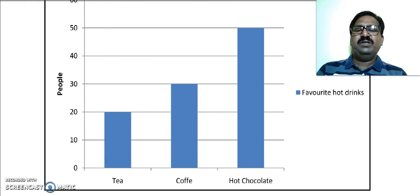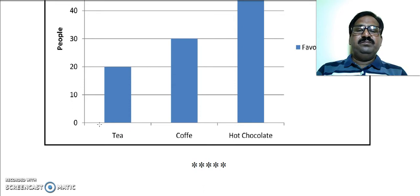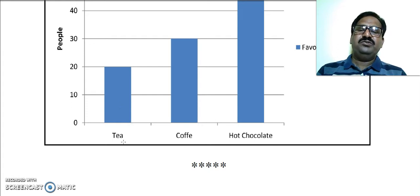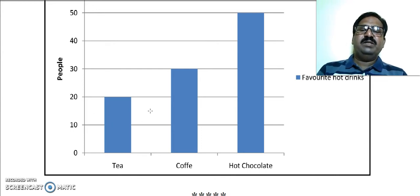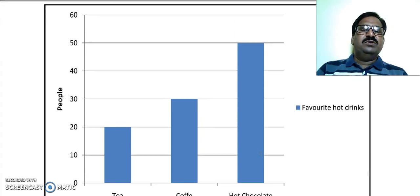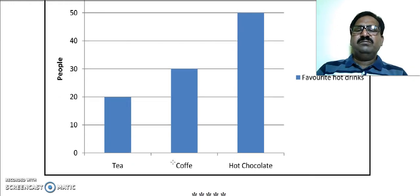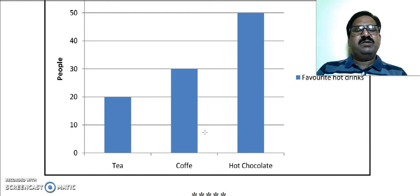From the bar diagram, 50% of people enjoy hot chocolate, 30% prefer coffee, and 20% prefer tea. So the minimum number of people enjoy tea rather than hot chocolate or coffee, while the maximum people prefer hot chocolate. On average, 30% of people prefer coffee. This is a general trend observable from the diagram.